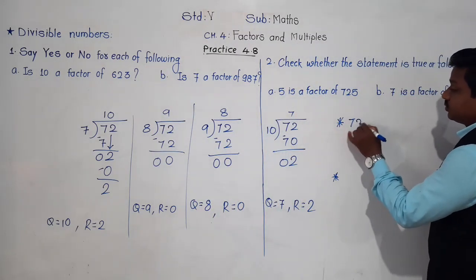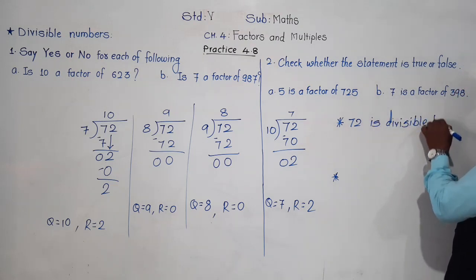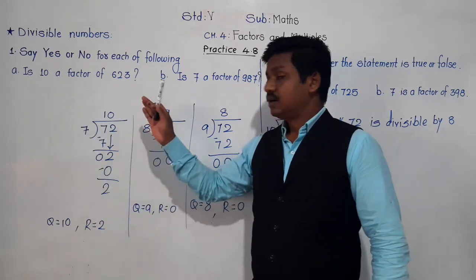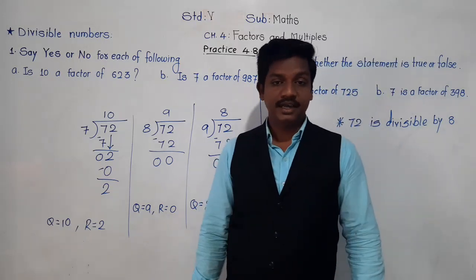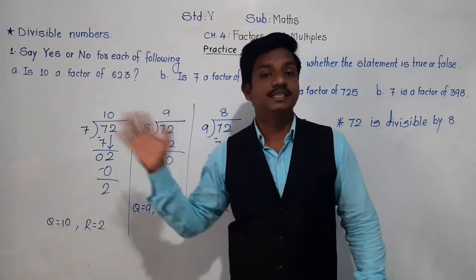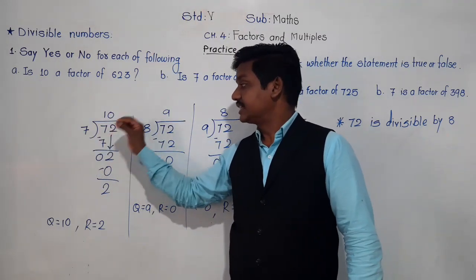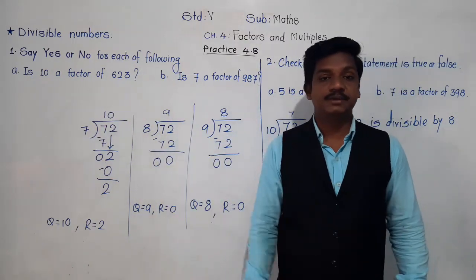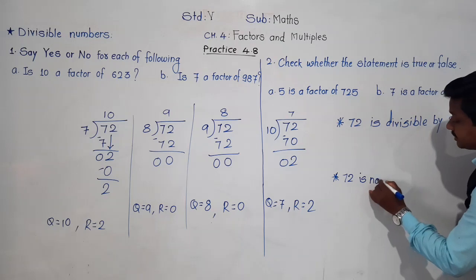Whereas when we divide 72 by 7, we got remainder 2. That means 72 is not divisible by 7 — because we are getting a remainder other than 0 (it is 2, 3, etc.). That means we cannot make an exact group of 72 when we divide it into groups of 7. So 72 is not divisible by 7.